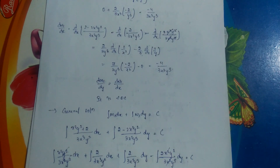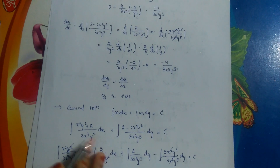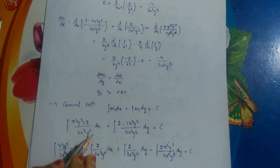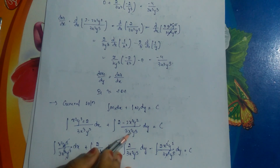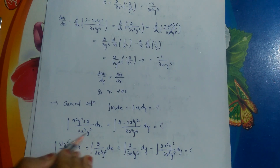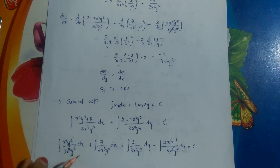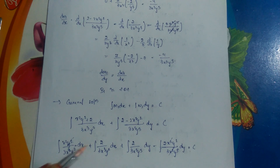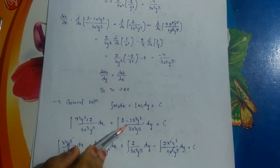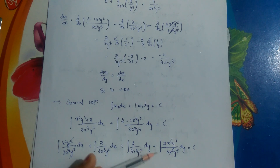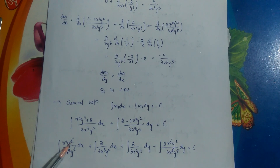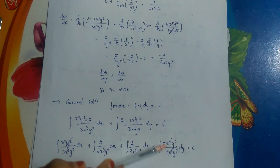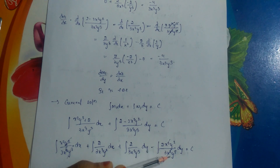Write out the integrals: ∫(x²y² + 2)/(3x³y²) dx + ∫(2 - 2x²y²)/(3x²y³) dy = c. Splitting the fractions: ∫(x²y²)/(3x³y²) dx + ∫2/(3x³y²) dx + ∫2/(3x²y³) dy - ∫(2x²y²)/(3x²y³) dy. In the first term y²/y² and x²/x³ simplify to 1/(3x). In the last term x²/x² and y²/y³ simplify.